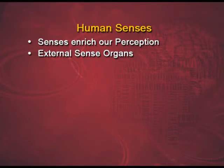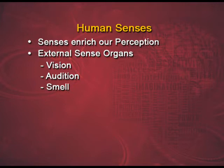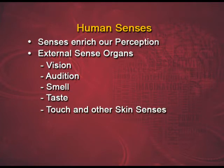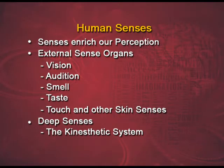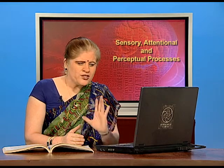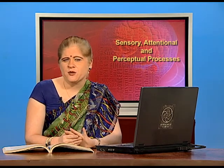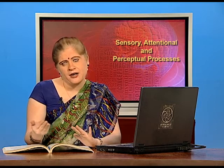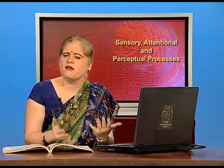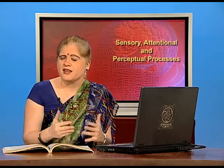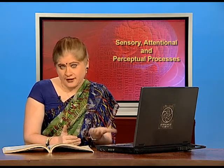The human senses are used to enrich our perception of different stimuli in the environment. Vision, audition, smell, taste, touch and other skin senses are the five external senses. There are two deep senses which are placed within us — these are the kinesthetic system and the vestibular system. We shall talk of the auditory sense and the visual sense more in detail in the next part of this chapter, because they are the major ones which contribute to almost 80 percent of our sensations and information processing in our lives.